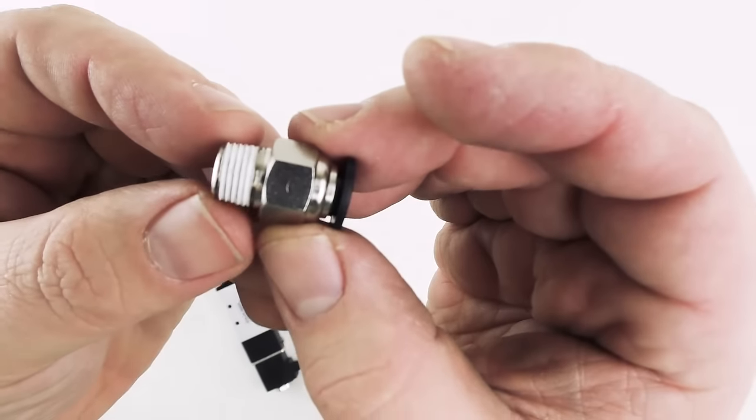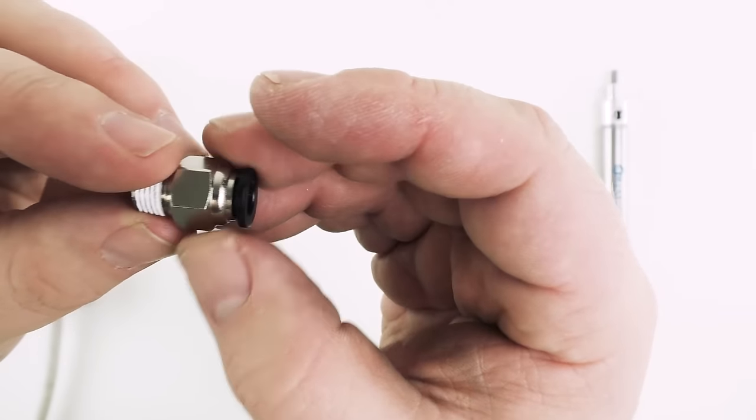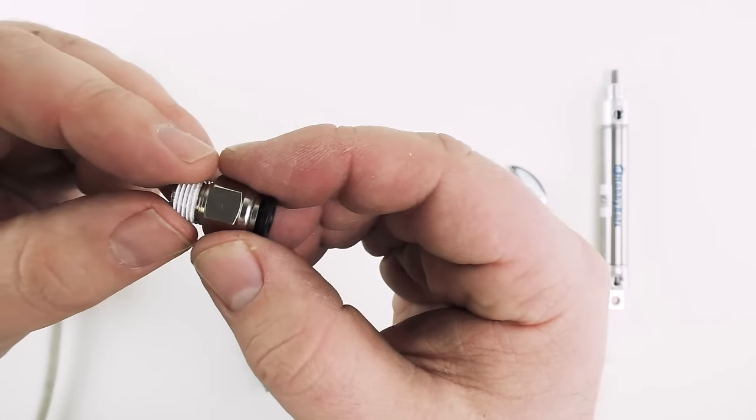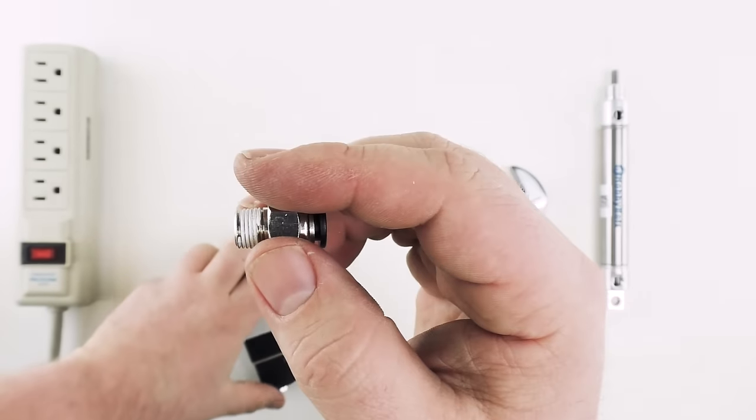You can see here that these fittings already have some Teflon applied, that's that white you see around the threads. If you find that after you tighten your fittings in there's still air leaking you may want to apply some additional Teflon tape to the fitting and then reinsert it into the solenoid and tighten it back down.